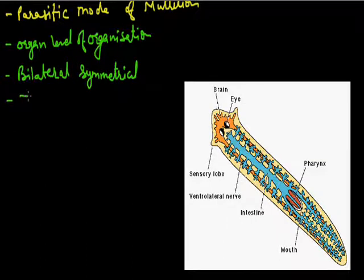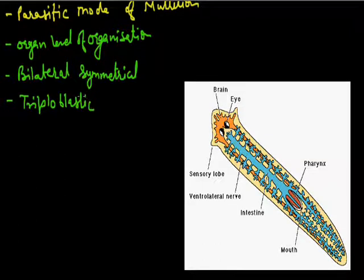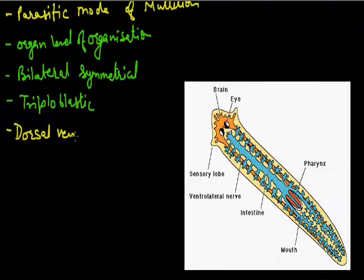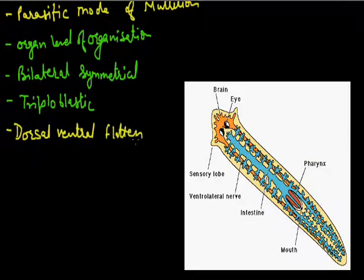These animals are triploblastic, meaning they have three germ layers: outer ectoderm, inner endoderm, and middle layer called mesoderm. These animals are dorsal-ventrally flattened — dorsal means upper surface and ventral means lower surface — so they are flattened from upper and lower sides, which is why we call them flatworms.